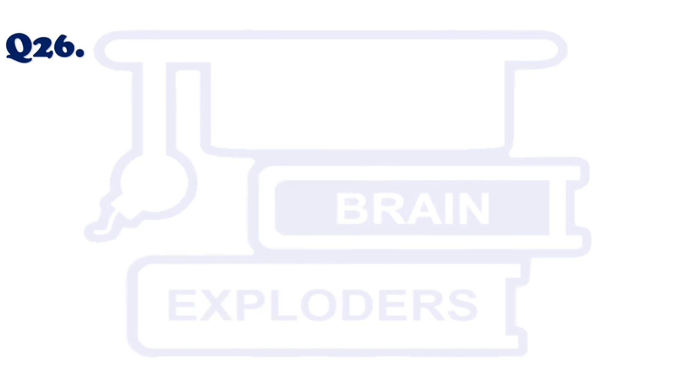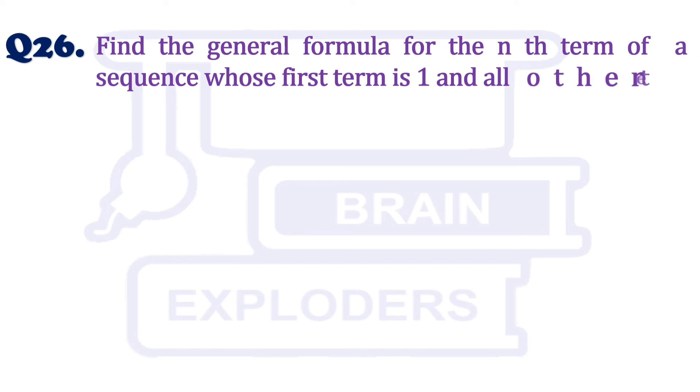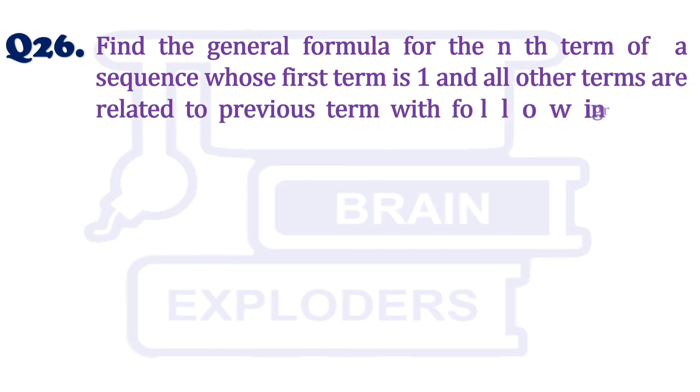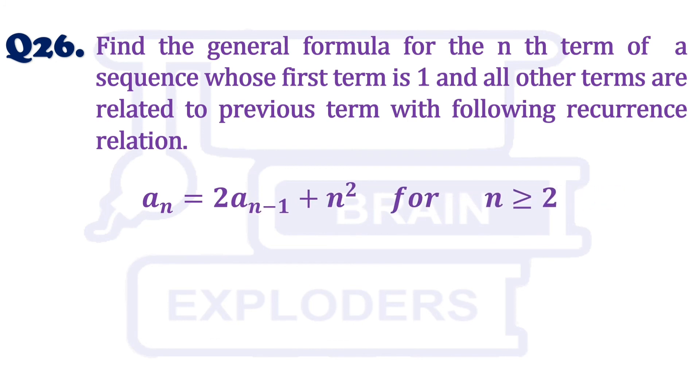Let's move to our another question. Find the general formula for the nth term of a sequence whose first term is 1 and all other terms are related to previous term with the following recurrence relation.